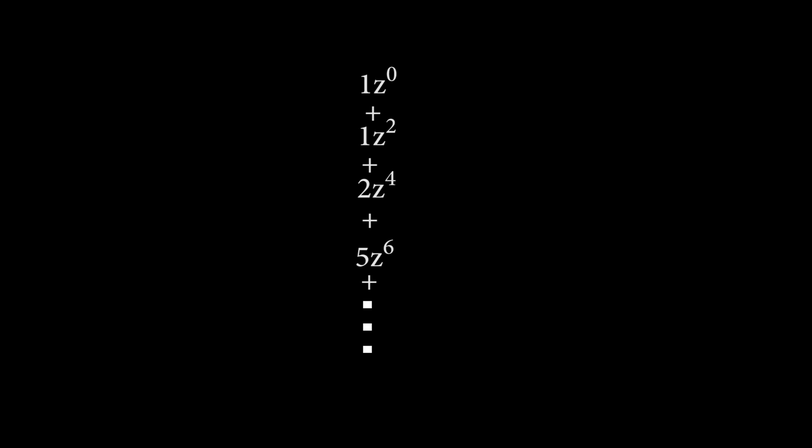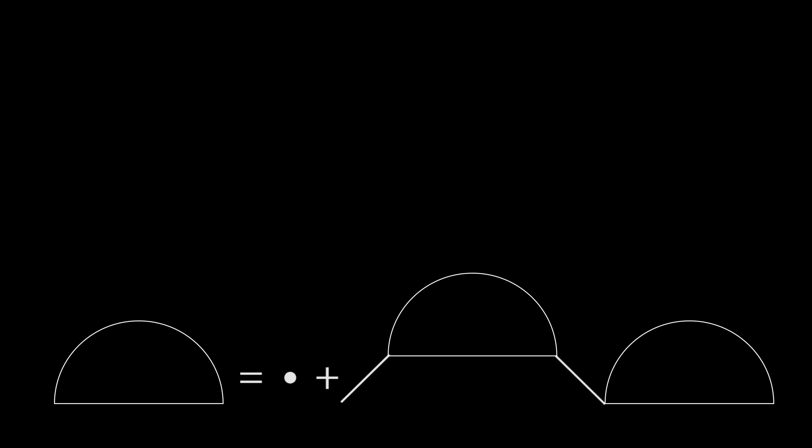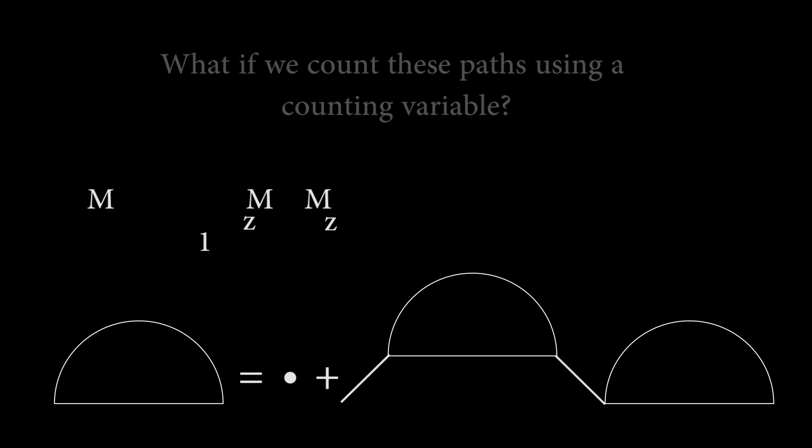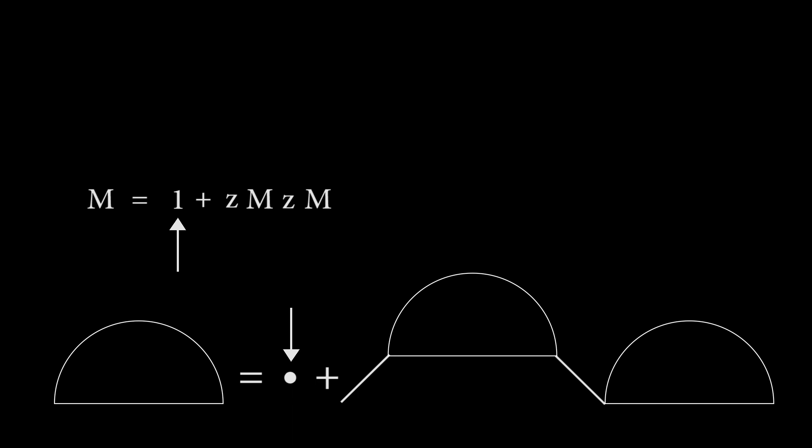Now we know how to interpret this series, but how can we generate it? Remember the recurrence relation we made using the blob? This describes paths of any possible length. What happens if we try to count the number of paths using a counting variable? There are only two units of path visible here, so we'll go ahead and label them with z. And let's give the blob a name. We'll call it m. Writing this as an equation, we get m equals 1 plus z times m times z times m. We are writing the path of length 0 as a 1 in the equation, since we know there is exactly one path of length 0. This could equivalently be written 1 times z raised to the 0. The exponent, meaning we are talking about paths of length 0, and the coefficient meaning that there are only one of them.